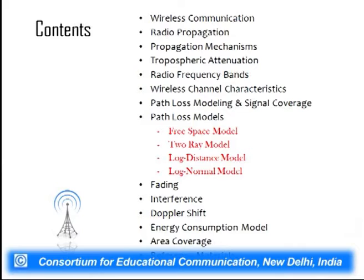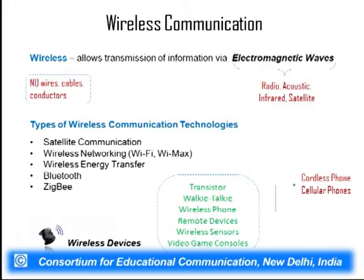Then we will cover wireless channel characteristics, path loss models — some benchmark models, some realistic models — and other impediments including fading, interference, Doppler shift, and their impact on energy and coverage issues.